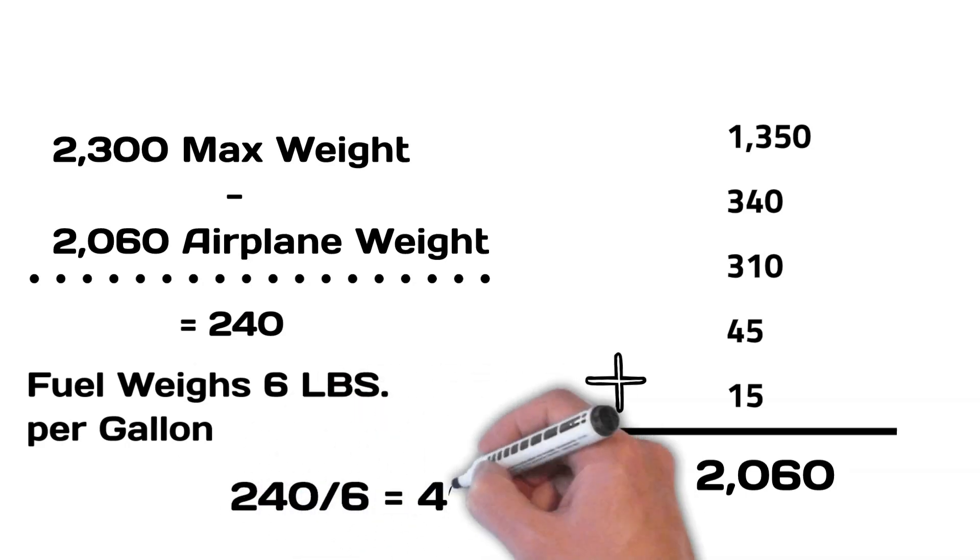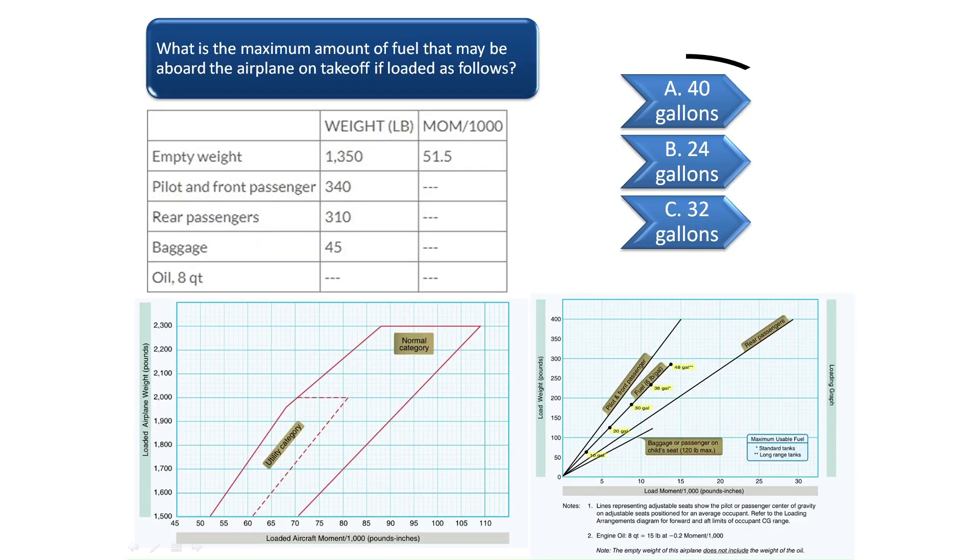The max weight of 2,300 pounds less the airplane weight of 2,060 pounds equals 240 pounds. Fuel weighs 6 pounds per gallon, so we would then divide 240 by 6 to find the max fuel amount of 40 gallons. The correct answer for question 1 is A.